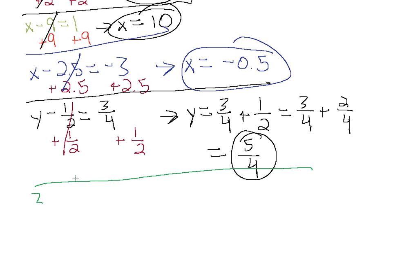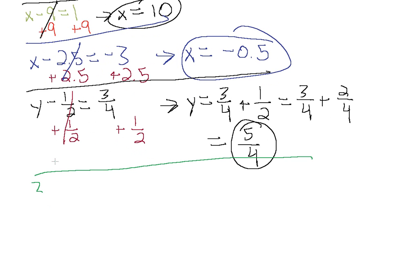Let's say we have z minus 11 equals 1/4. I just want to get you familiar and comfortable with using different variables. We want to get the variable z all by itself and everything else on the other side. We have a minus 11 here, so we'll add 11 on both sides.